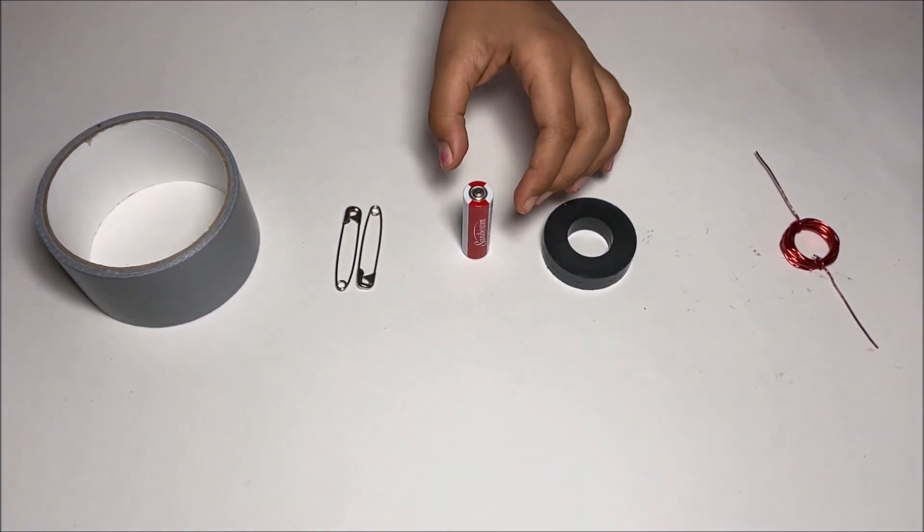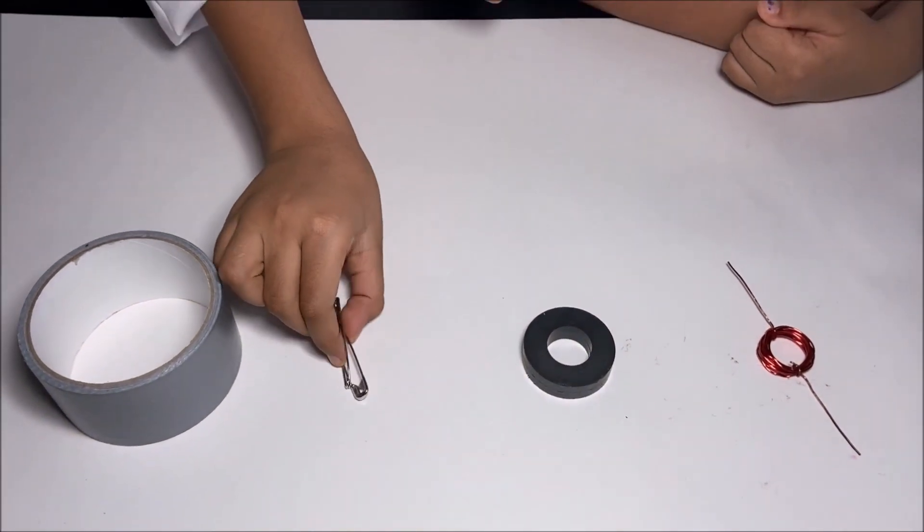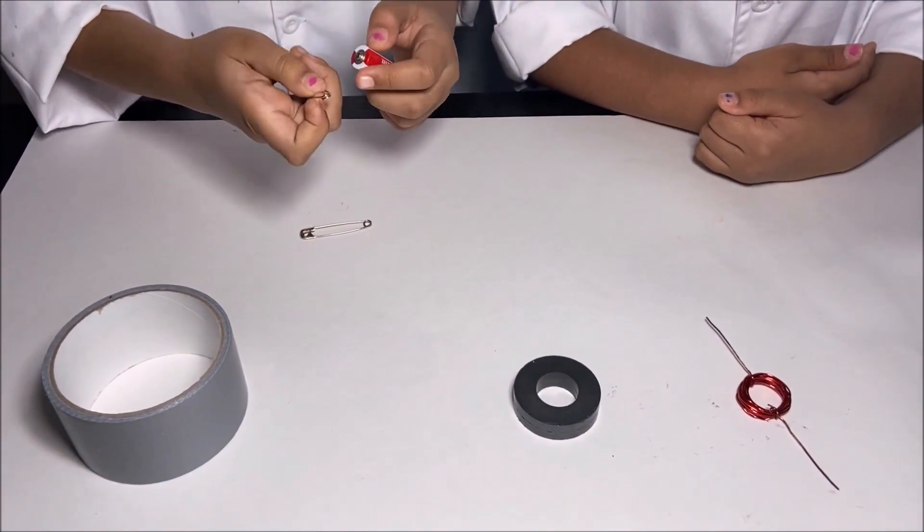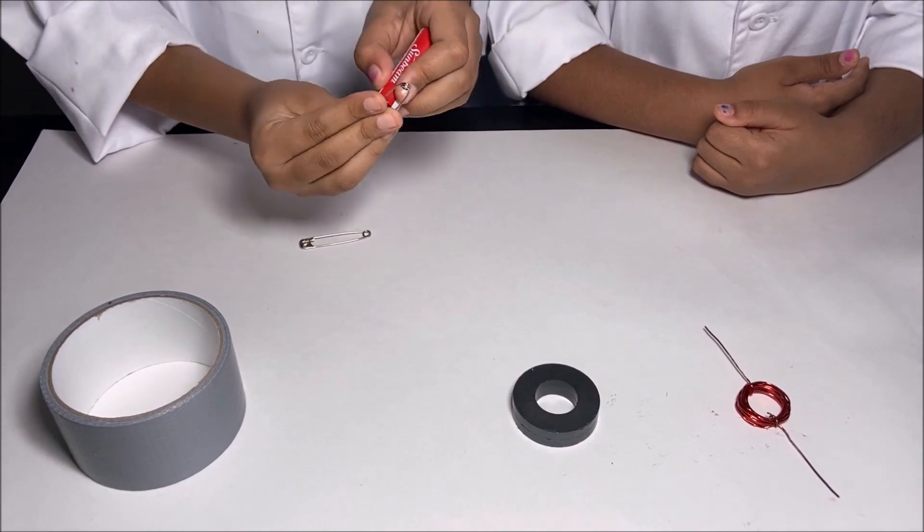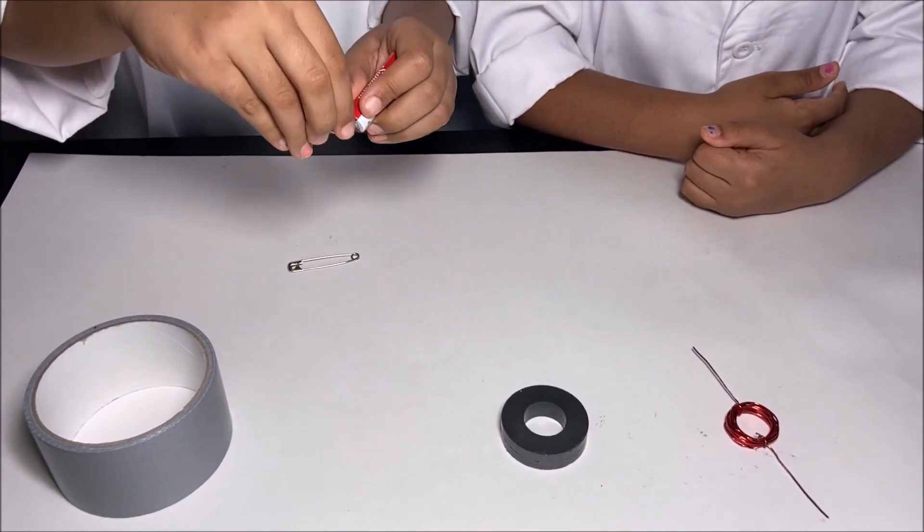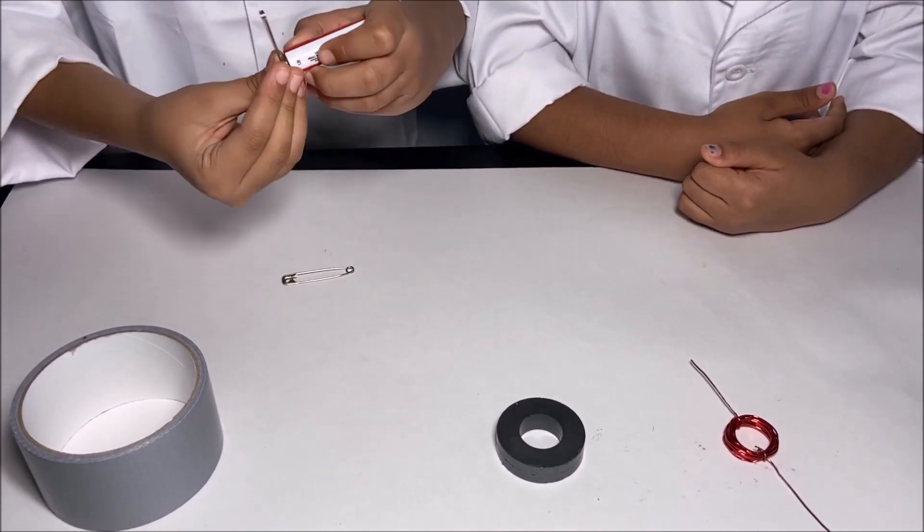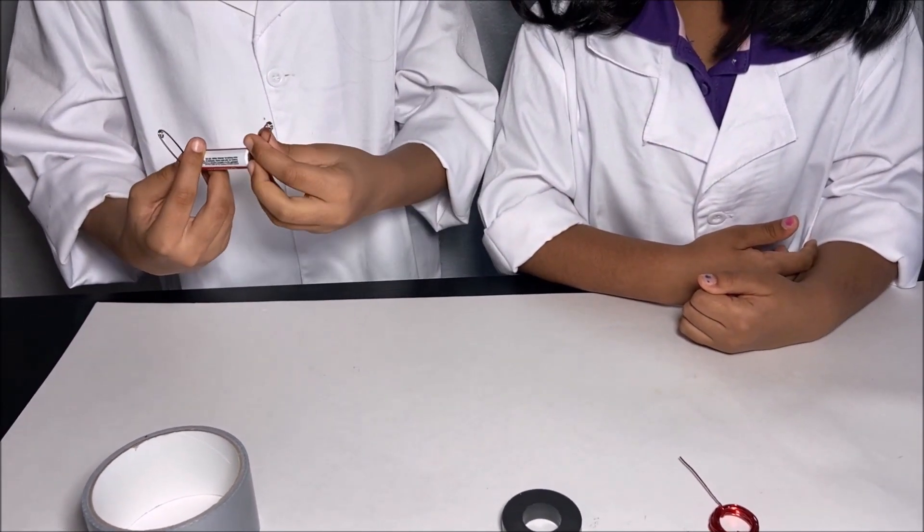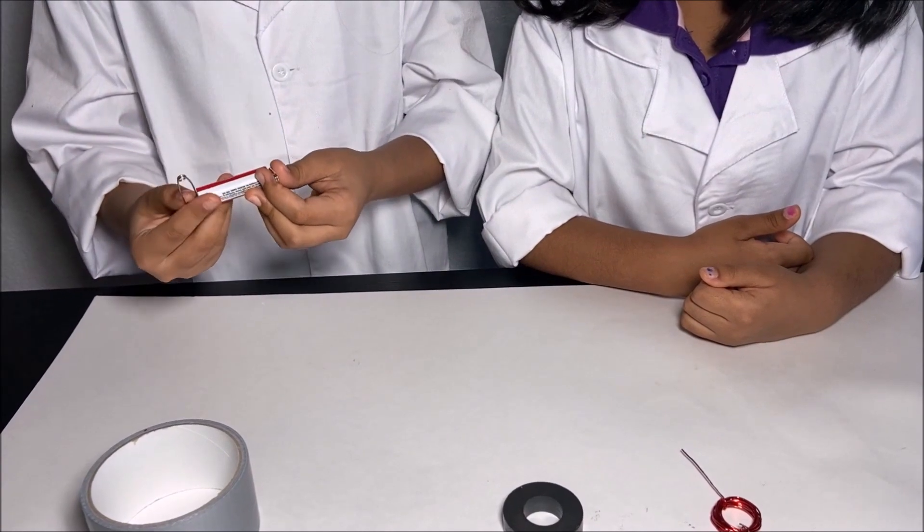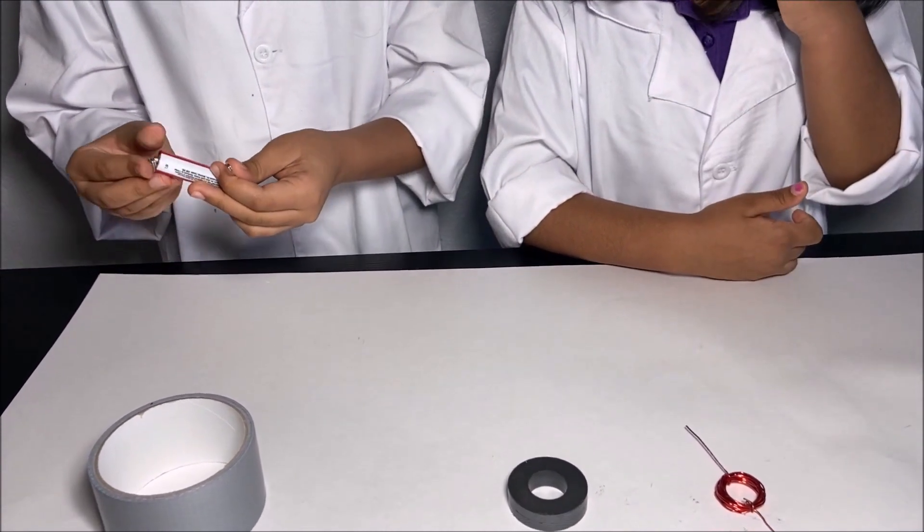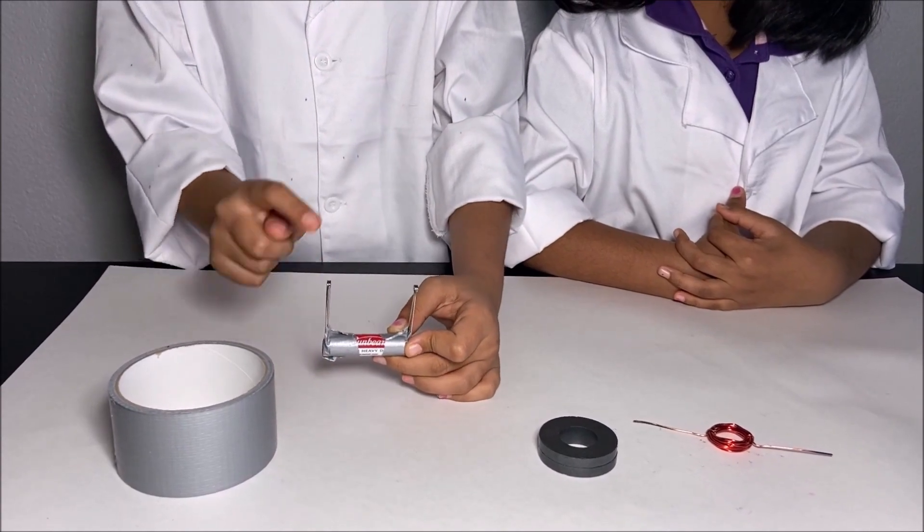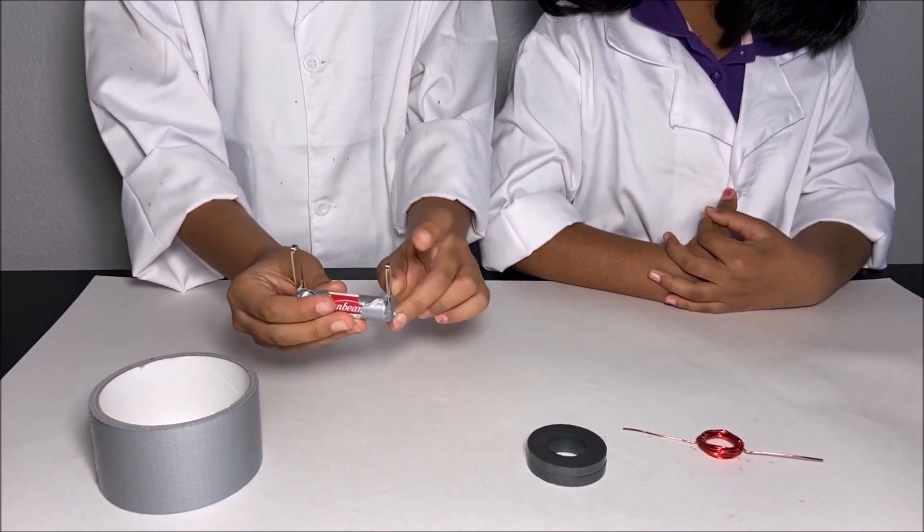Now I'm going to take the battery and the safety pins and attach them like this, upside down. Both of the safety pins have to be upside down, and then I'm going to attach those safety pins with duct tape. Now we attach the two safety pins to the battery.